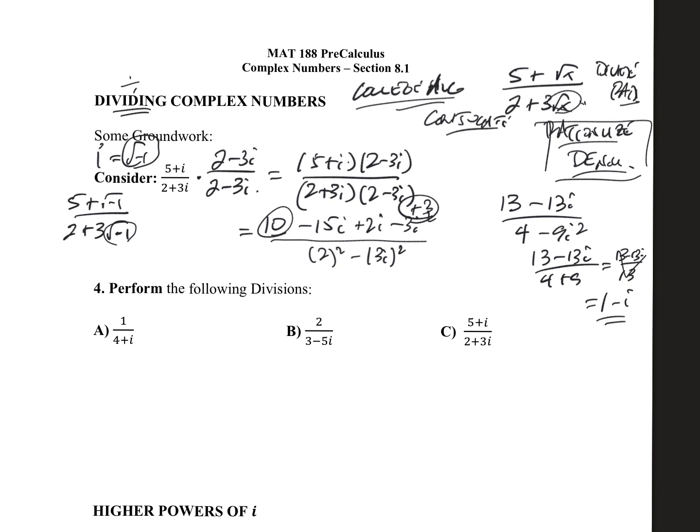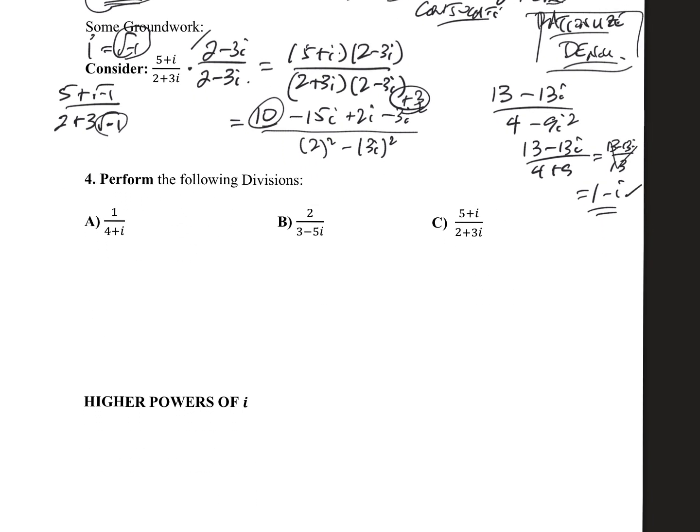So essentially, in order to divide complex numbers, we don't. What we do is we rewrite it. We simplify it by rationalizing the denominator and then just doing a bunch of multiplication. And then if we're lucky, not only does the radical go away, but the fraction goes away. So that's extremely lucky. So with that in mind, let's perform the following divisions.